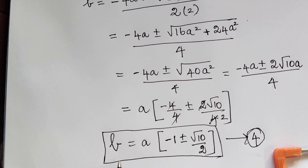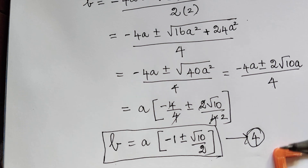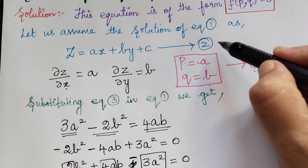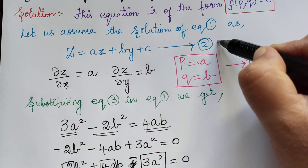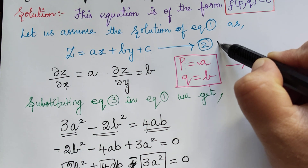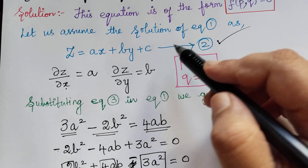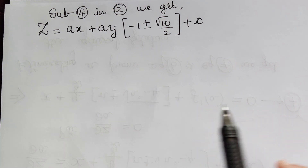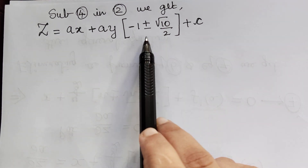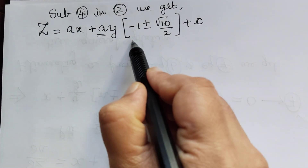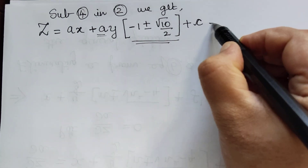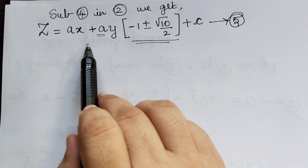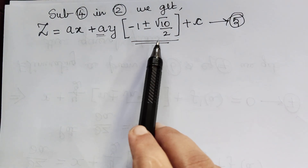Now this value of b has to be substituted in equation 2, which is z = ax + by + c. Substituting equation 4 into equation 2, we obtain the complete solution. This is equation 5, and equation 5 gives us the complete solution.